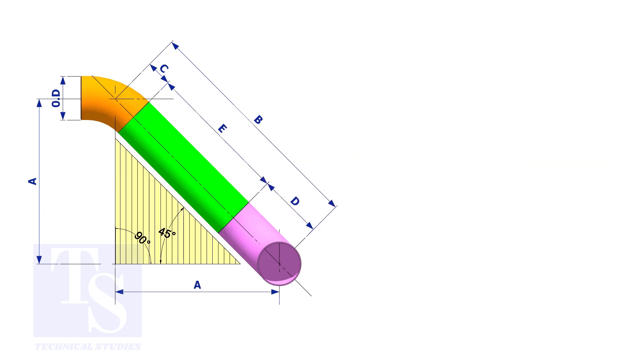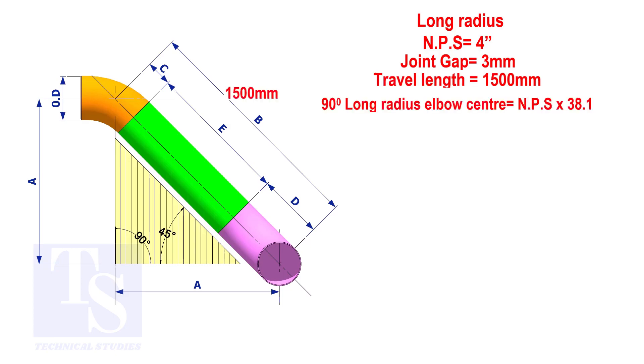Assume that the elbows are long radius. Calculate the true length of the pipe. The elbow center is the nominal pipe size multiplied by 38.1. So, the elbow center of the 90 degree elbow is 152.4 millimeters.